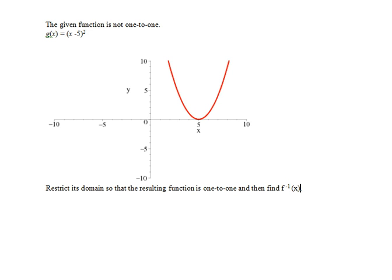We are given a function g of x equals x minus 5 quantity squared, which is not 1 to 1, and asked to restrict the domain so that the resulting function is 1 to 1, and then find the associated inverse function.